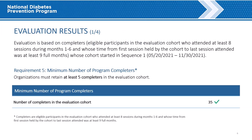Evaluation Results, part 1 of 4. If a full evaluation has been performed, the results are found in the evaluation results section. The section starts by defining the term "completer" and then by indicating who was evaluated according to the date range in which their cohorts began. Requirement 5 states that there must be at least 5 completers in the evaluation cohort. Completers are defined as eligible participants who attended at least 8 sessions during months 1 through 6, and whose time from first session held by the cohort to last session attended was at least 9 full months. In this example, there were 35 completers, and the green check indicates the organization has met requirement 5.